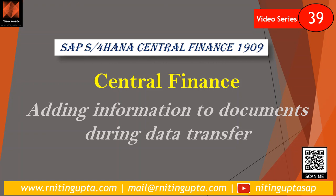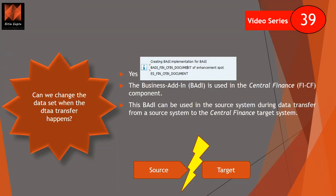In this video, we'll be talking about how data or information can be added to the data set when documents are moving from the source system to the target system. SAP has provided a BADI called BODY_FIN_CFIN, and it is used in the Central Finance component. You have to implement this BADI in the source system to enhance the data.